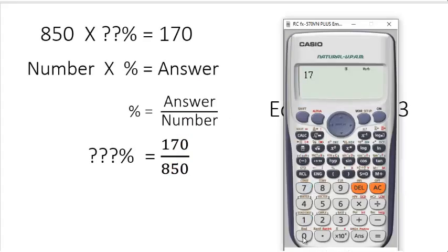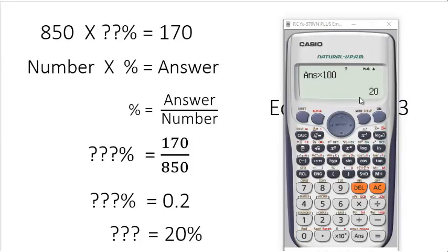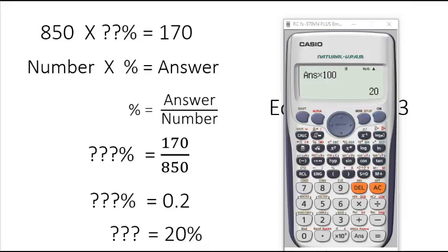So, 170 divided by 850 equals 0.2. To convert this into percentage, simply multiply it with 100 and put the sign of percent.